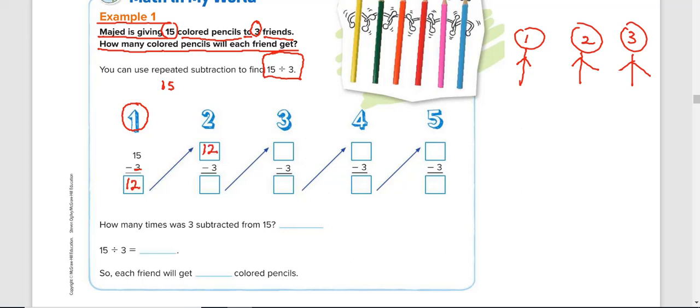I take the 12 up to step 2. 12 minus 3 will give you 9. I take the 9 to step 3. 9 minus 3 is 6. Take the 6 to step 4. 6 minus 3 is 3. Take the 3 to step 5. 3 minus 3 is 0.